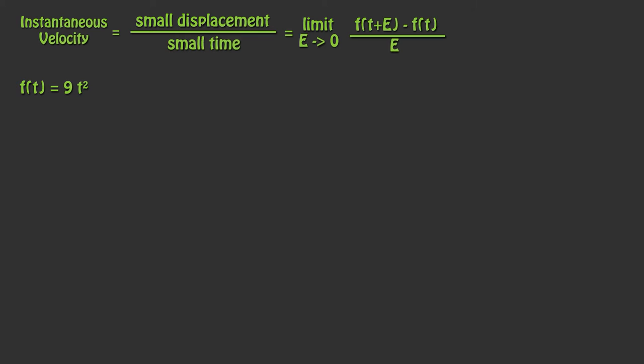Let's use the function f is equal to 9t squared, where t is the time and f is the function that tells us how distance changes over time. If we want to find the instantaneous velocity somewhere on this function, we can use our fancy new limit equation. We know f of t is equal to 9 times t squared. To get the function of t plus the incremental e, we need to plug in t plus e for the original t. f of t plus e is equal to 9 times the quantity t plus e squared.